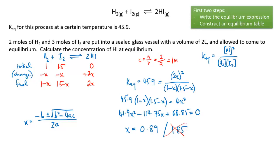We know from our table that the concentration of hydrogen iodide was 2x, we know that x is 0.89, therefore concentration of hydrogen iodide equals 2 times 0.89 which equals 1.78 molar.